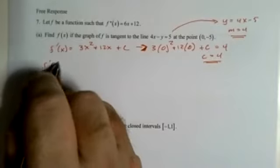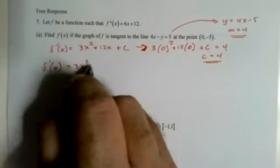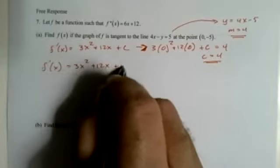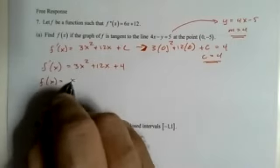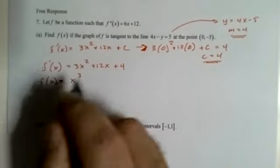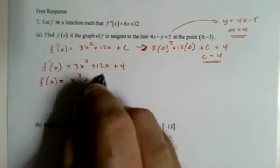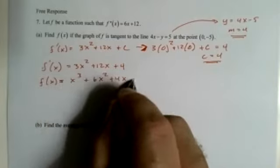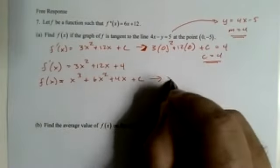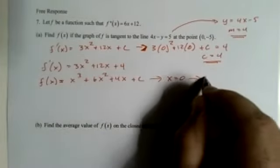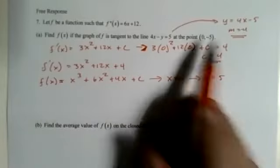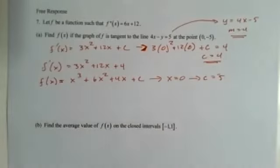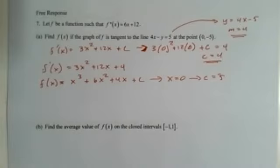f prime of x equals 3x squared plus 12x plus 4. f of x equals x to the third plus 6x squared plus 4x plus c. When x equals 0, c equals 5. So, there's my function. f of x, x to the third plus 6x squared plus 4x minus 5.